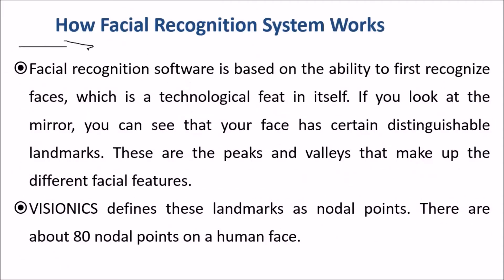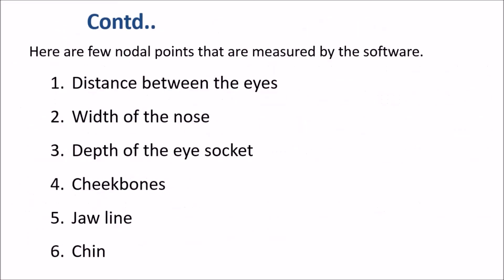Facial recognition software is based on the ability to first recognize faces. Looking in a mirror, you can see that your face has certain distinguished landmarks that can be distinguished from any other person — even identical twins may have differences. These peaks and valleys make up different facial features. These landmarks are defined as nodal points, and there are about 80 nodal points on a human face, including the distance between the eyes, width of the nose, depth of the eye socket, cheekbones, jawline, and chin.